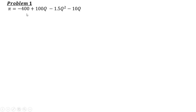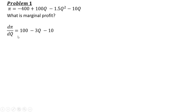Let's do a numerical example. Here is a firm's profit function. We're going to solve for marginal profit by taking the derivative of the profit function with respect to quantity. The derivative of minus 400 is zero, the derivative of 100q is 100, the derivative of minus 1.5q squared is minus 3q, and the derivative of minus 10q is minus 10. So that is marginal profit.